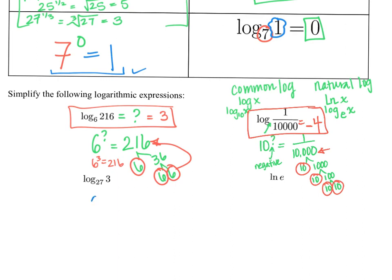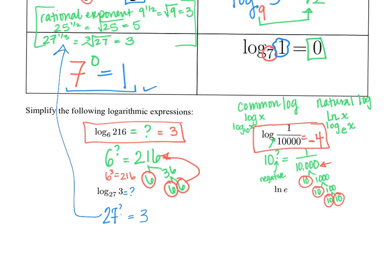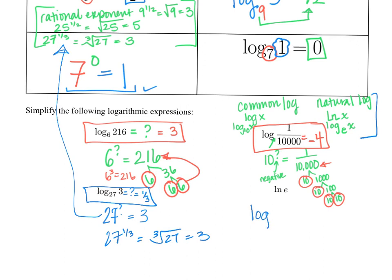For log base 27 of 3: we're saying 27 to some power has to equal 3. It's not a fraction, so it's not a negative exponent — it's a rational exponent, specifically the one-third power, since 27 to the 1/3 equals the third root of 27, which is 3. For natural log of e: that means log base e, so we're asking e to what power equals e — that has to be 1. So natural log of e equals 1. This makes sense because the natural log and the exponential base e are inverses of each other.